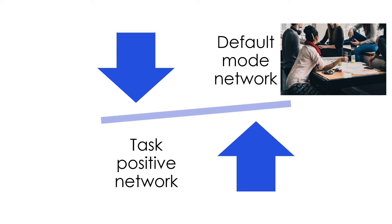The default mode network is activated when we perform tasks involved in emotion processing and social interactions. Making moral decisions involves emotions such as empathy, compassion, gratitude, pride, disgust, guilt, shame, regret, and moral outrage. This is because the purpose of making moral decisions is to promote and stabilize cooperative behaviors dependent upon socially shaped ideas of right and wrong. The emotional and social aspects of moral decision making explain why making moral decisions activates the decision maker's default mode network.